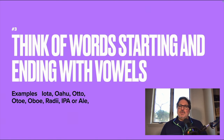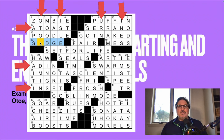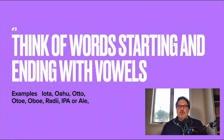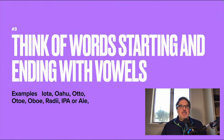Next, start thinking of words that could begin or end in a vowel. When you look at a grid, look across the top and left column — almost half the answers have to start with a vowel. Look across the right and bottom — almost half the answers have to end in a vowel. For example: iota, Oahu, the name Otto, Odi (a tribe), oboe (an instrument), radii (plural of radius), IPA (a type of beer), ale (a type of beer). If you start thinking in terms of words that begin and end with vowels, you'll notice they come up a lot because they're needed to fill in the grid.